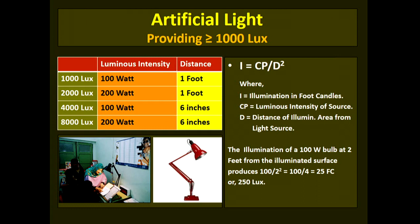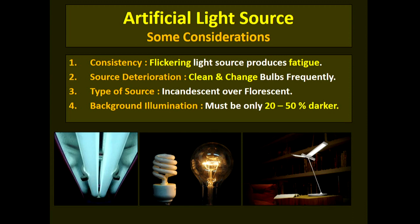When using artificial illumination sources, consider consistency — the source should not flicker, as flickering with a single fluorescent tube causes fatigue in low vision clients. Use multiple tubes or an incandescent bulb instead. Tungsten and fluorescent sources deteriorate over time, so clean them frequently and change bulbs when needed. Always prefer an incandescent bulb over a fluorescent tube because of blue light emission — both CFL and LED lamps produce intense peaks in the blue light range.